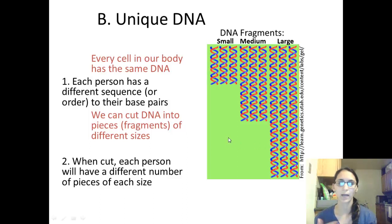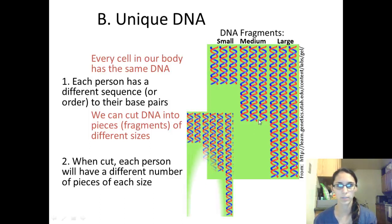For example, I would have a different number of small fragments than you or someone else. So here's another example of some DNA fragments. In this example there's only two small ones, three medium fragments and then one larger fragment of DNA. So this would be from a different person.